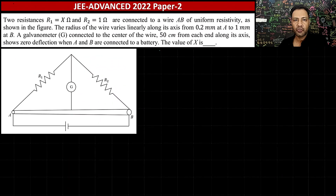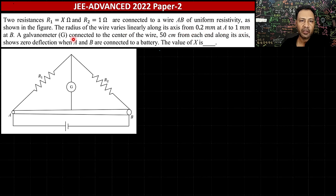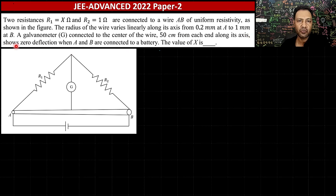Let's look at this question on current electricity from JEE Advanced 2022 Paper 2. The question states: two resistances R1 = x ohm and R2 = 1 ohm are connected to a wire AB of uniform resistivity as shown in the figure. The radius of the wire varies linearly along its axis from 0.2 mm at A to 1 mm at B. A galvanometer G connected to the center of the wire, 50 cm from each end, shows zero deflection when A and B are connected to a battery.